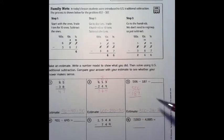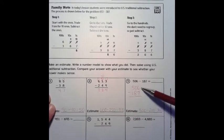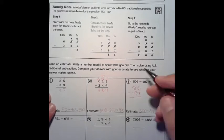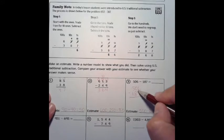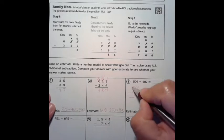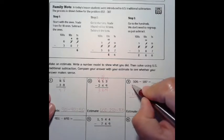Again, start with our ones place. 6 take away 7 we cannot do that, we've got to trade, but in this case we don't have anything in the tens to trade with, so we've got to go to the hundreds. We're going to trade one of the hundreds, make that a 4.